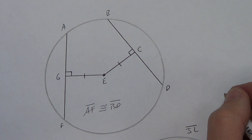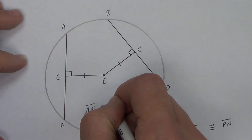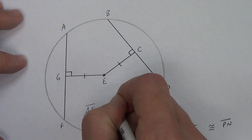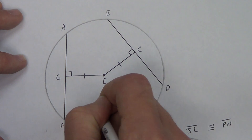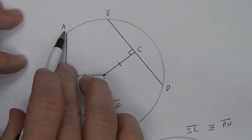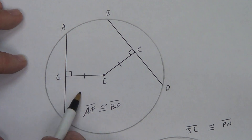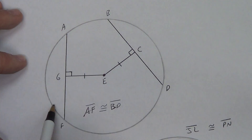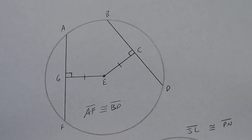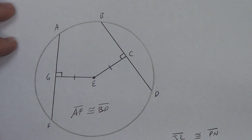We could prove this is true — it takes a little while but we could. We'd draw radii like we've done before, we'd have congruent triangles by HL — actually four different congruent triangles. Then we'd take those arcs out and get four different congruent arcs. We'd add the arcs together and get two congruent arcs. And with congruent arcs, it leads to congruent chords, like we looked at in our very first theorem.